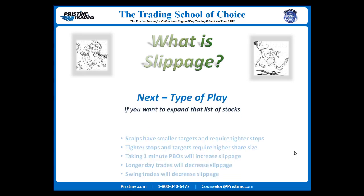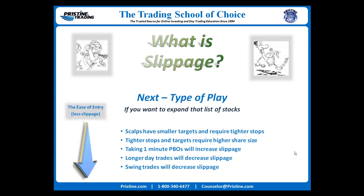The time frames you are playing will also matter. Scalp trades typically have smaller targets which require tighter stops, which require higher share size to make more money, and this increased share size will increase the chance for slippage. Taking longer-term day trades will have the reverse effect and decrease the chance for slippage. When taking long-term positions such as swing or core trades, slippage is generally not an issue at all.